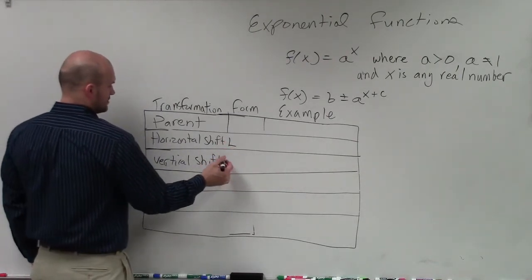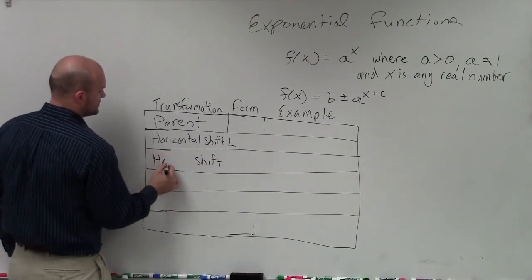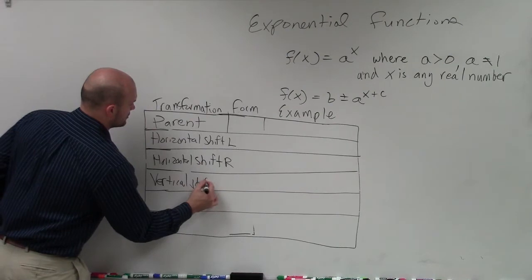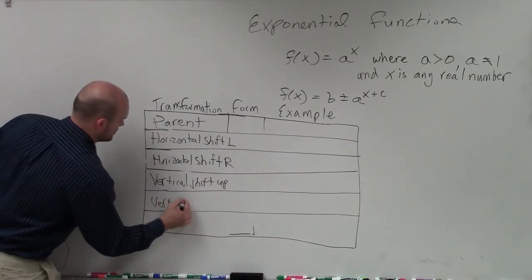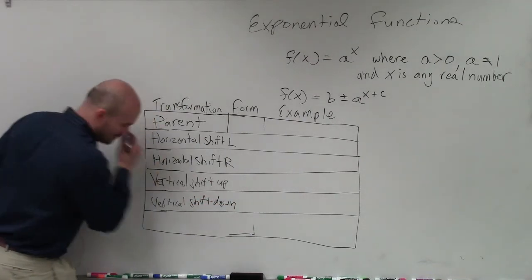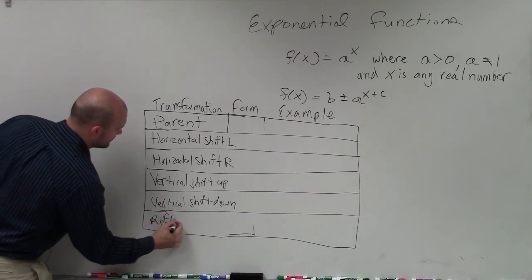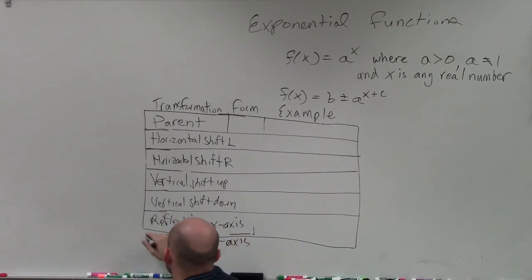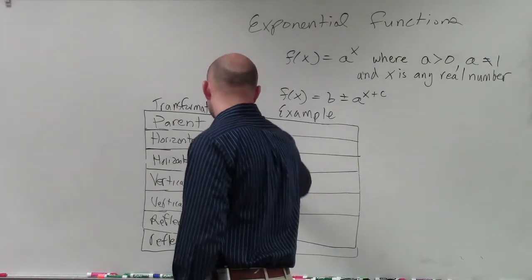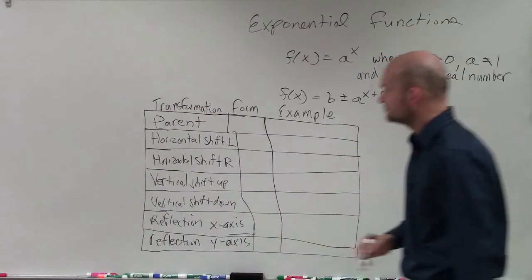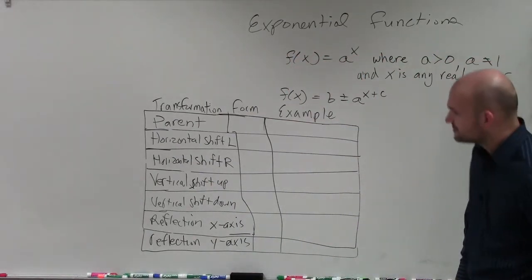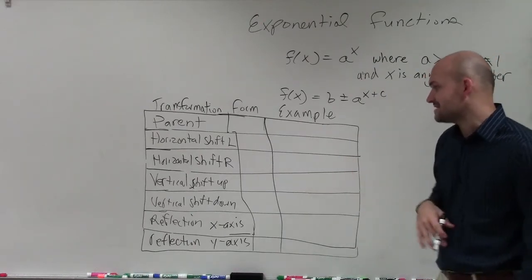Then we'll do horizontal shift, vertical shift. Let's do horizontal shift to the right, vertical shift up, vertical shift down, and let's do a reflection about the x-axis. And then there's one more reflection, about the y-axis. So you have parent graph, horizontal shift left, horizontal shift to the right, vertical shift up, vertical shift down, reflection x-axis, reflection y-axis.